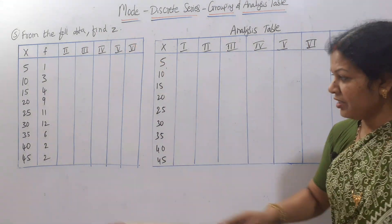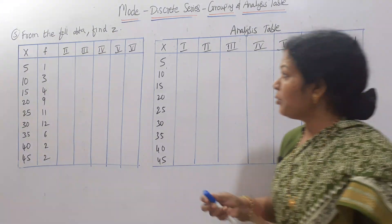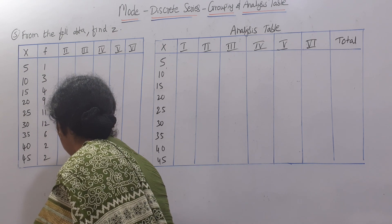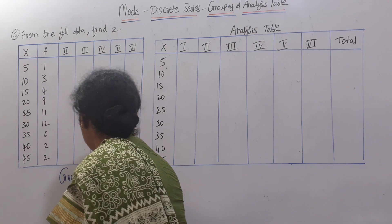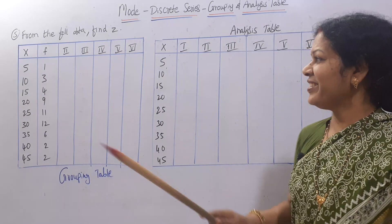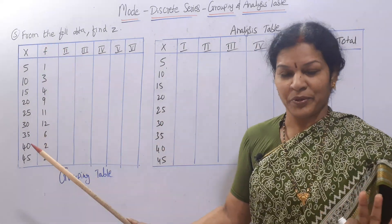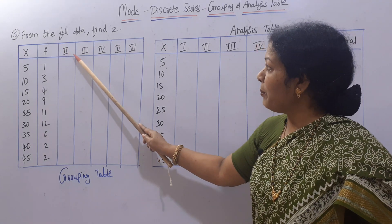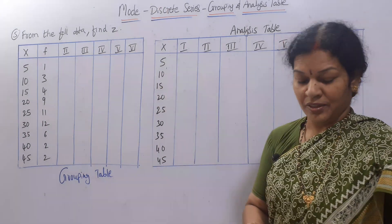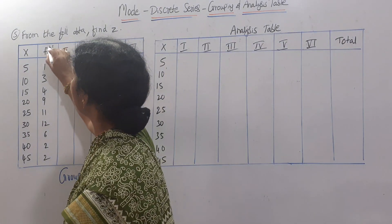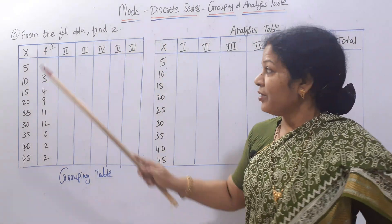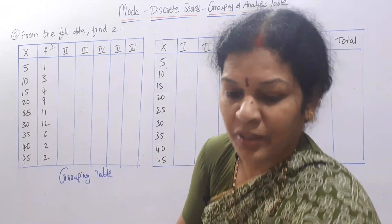I have already drawn the grouping table and analysis table. This is the grouping table, and this is the analysis table. I have written X and frequency. I have prepared five more columns: columns 2, 3, 4, 5, and 6. Column 1 is simply the original frequency as given.